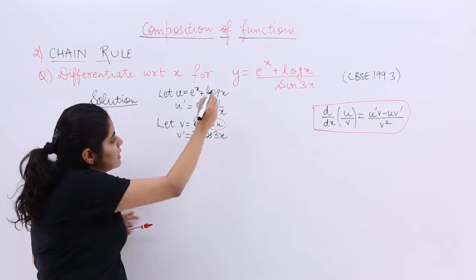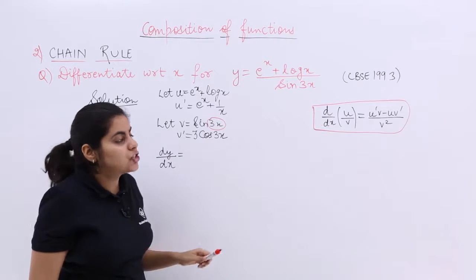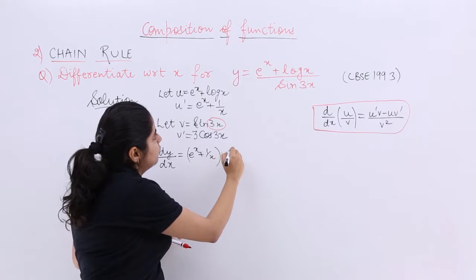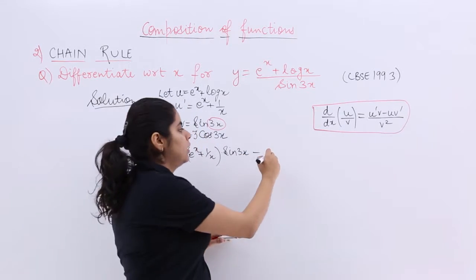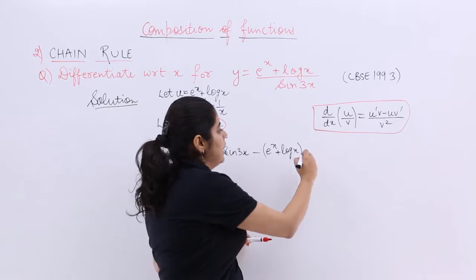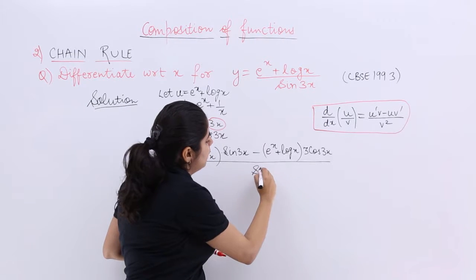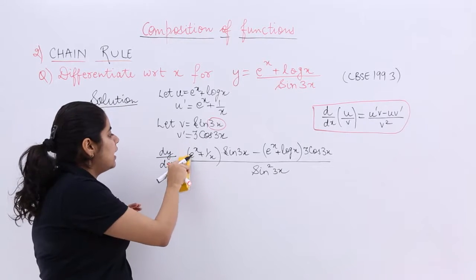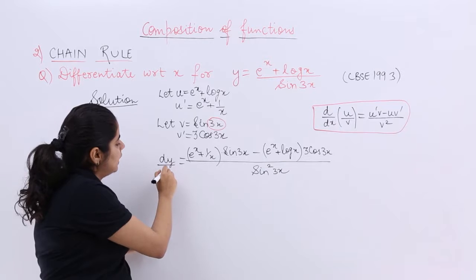Now let us write the differentiation. By the quotient rule formula, dy/dx equals u'v minus uv' upon v squared. So: u' is (e^x + 1/x), v is sin 3x, u is (e^x + log x), and v' is 3 cos 3x — all over v squared. Note that dy/dx should be aligned with the fraction bar when writing.